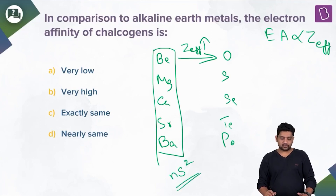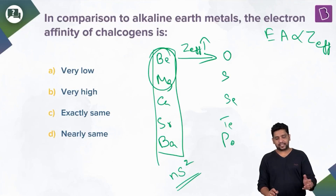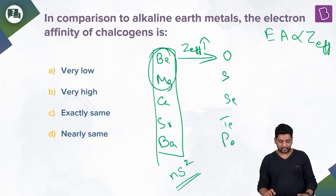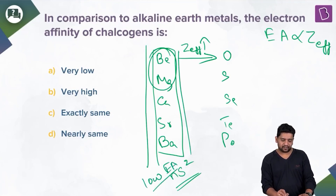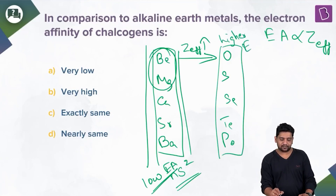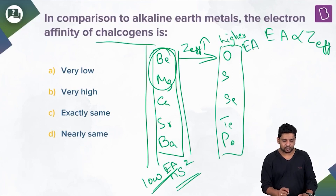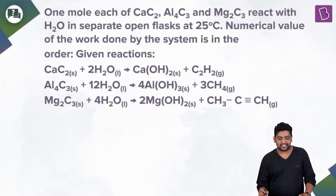Alkaline earth metals have stable ns² configurations. Be (2s²) and Mg (3s²) don't even release energy when an electron is added — electron gain enthalpy is positive. So Group 2 elements have very low EA values. Compared to them, chalcogens on the right side of the periodic table have much higher electron affinity. Answer is option B.